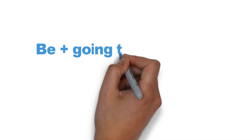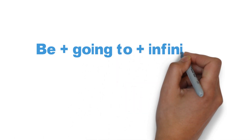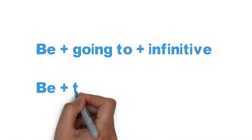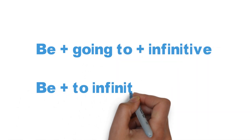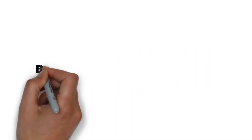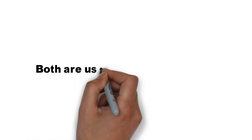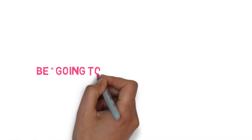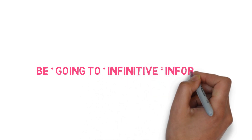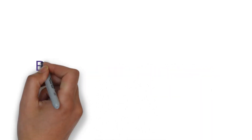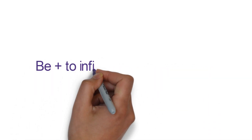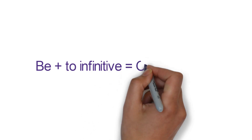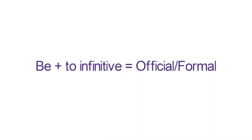Be plus going to plus infinitive and Be plus to infinitive are both used for future plans. Be plus going to plus infinitive is an informal structure, while Be plus to infinitive is an official and formal structure.